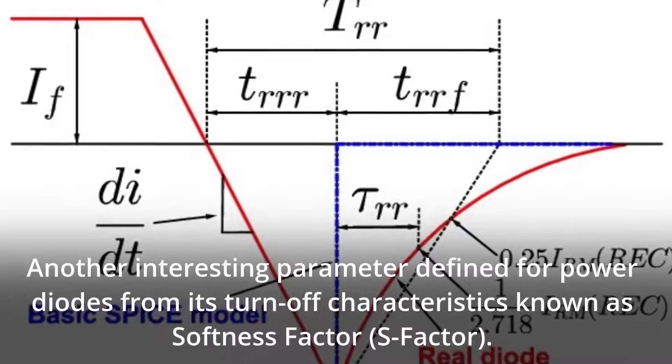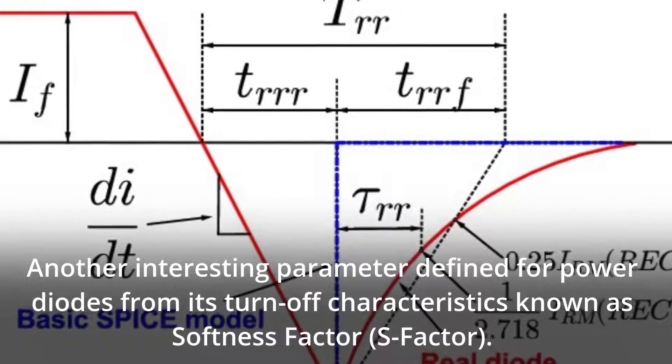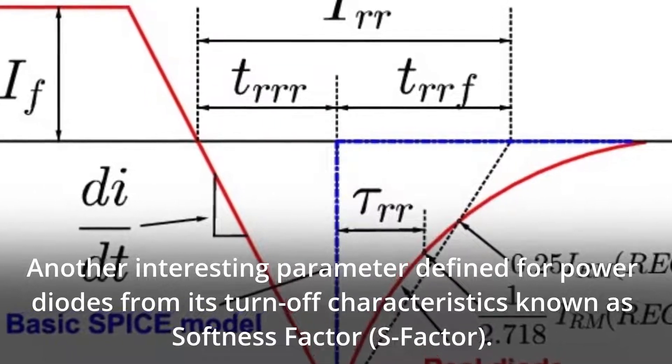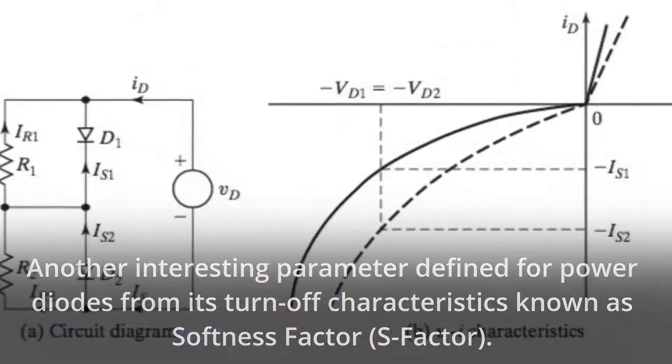Another interesting parameter defined for power diodes from its turnoff characteristics is known as softness factor, S-factor, defined as the ratio of times TB and TA.